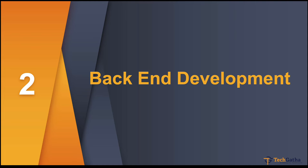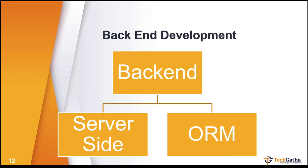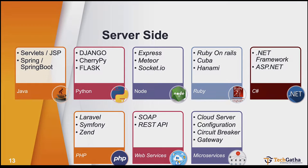Back-end development involves two areas: server-side and ORM frameworks. For server-side development, there are Java, Python, Node.js, Ruby, C#, and PHP. It also covers creating web services and microservice architecture. For Java, you should be aware of Servlets, JSP, Spring, and Spring Boot, which are commonly used to create server-side applications.